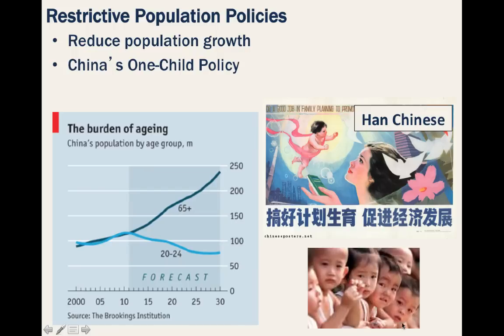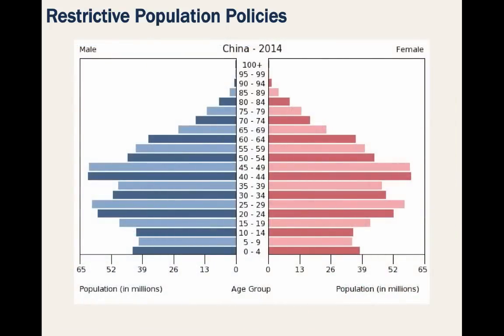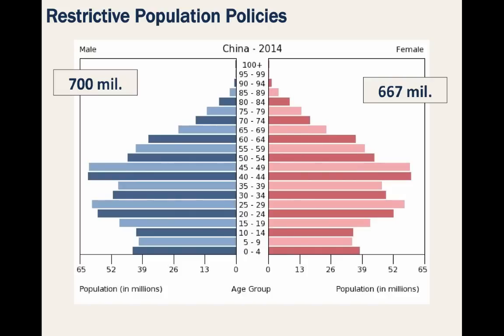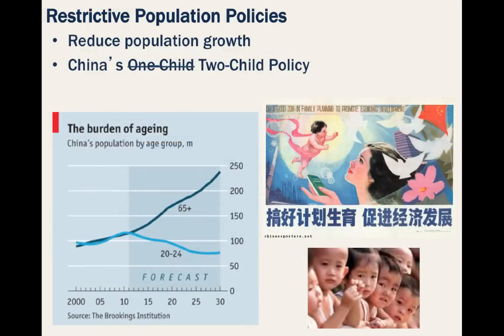Nonetheless, this policy led to an inordinate number of female orphans, since many parents did not qualify for exemptions, resulting in a tremendous imbalance of males to females. In 2015, the gender ratio at birth was 116 boys born to every 100 girls. The success of this program has been disputed. China's fertility rate declined, but with an aging population nearing retirement age in less than two decades, China amended the policy to a two-child policy starting in 2016.